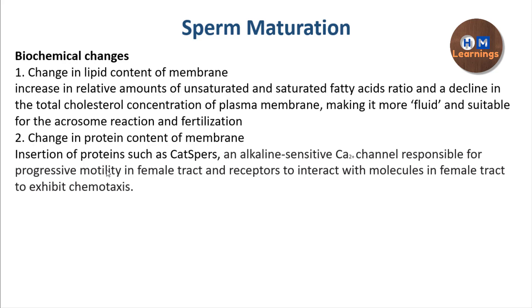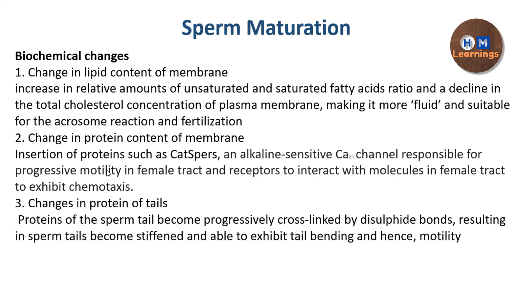The next change involves proteins in the tail. The tail contains microtubules and other proteins important for producing motility. There is cross-linking of these proteins, which makes the tail stiffer so that it can exhibit bending and enable the sperm to move forward.